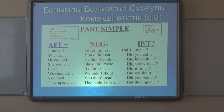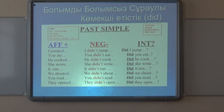For example: the affirmative sentence is 'I jumped.' The negative sentence, with the auxiliary verb 'did' plus 'not,' is 'I didn't jump.' And the interrogative sentence is 'Did I jump?'